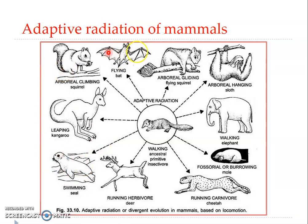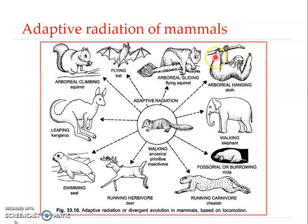So we saw the arboreal type, volant type, cursorial type, fossorial type, and aquatic type. The last categories include ambulatory — adapted for walking — and saltatory — adapted for jumping. All these are the different modes of life and locomotion to which different kinds of mammals have adapted, yet all these animals have evolved from the same common ancestor. From that same ancestor, these mammals developed their various morphological adaptations. This is about adaptive radiation.